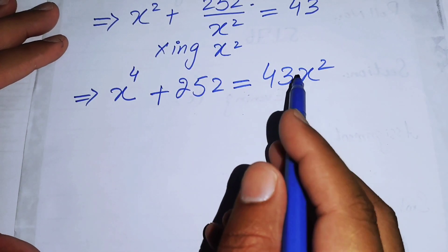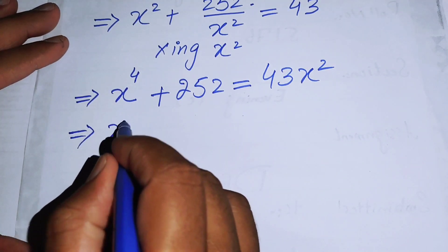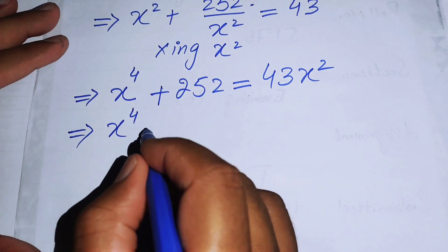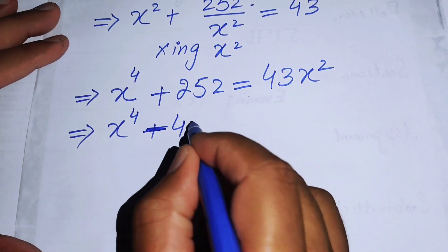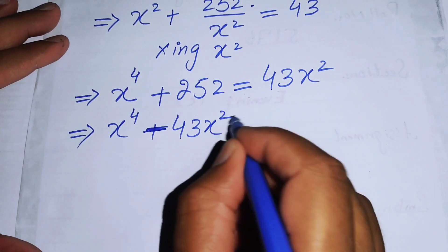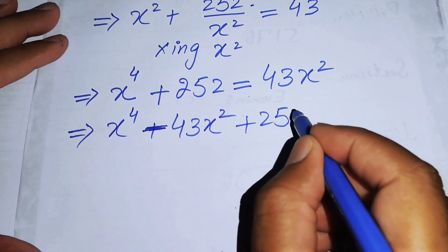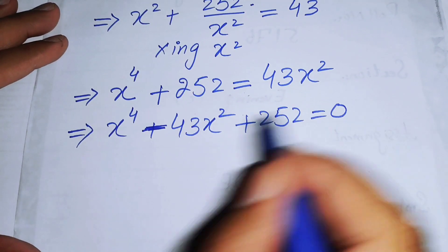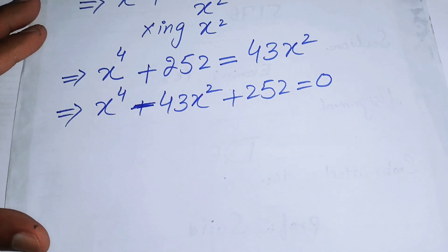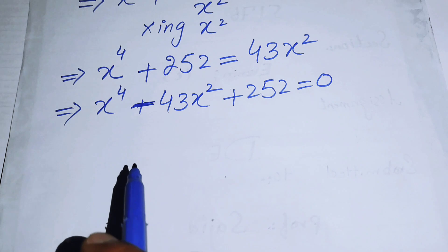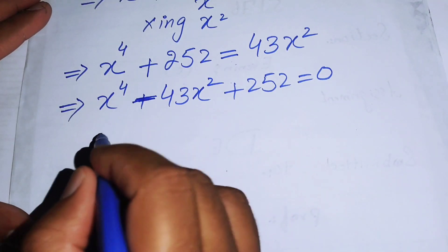After that we rearrange the terms by moving 43x² to the left-hand side, so it becomes x⁴ - 43x² + 252 = 0.